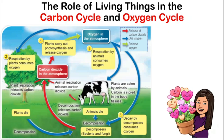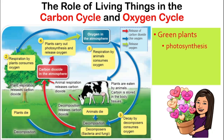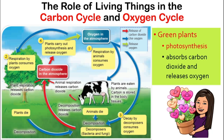There is only one process carried out by green plants called photosynthesis. This is the only process where carbon dioxide is taken away and oxygen is given back. Can you see why green plants are so important to us?